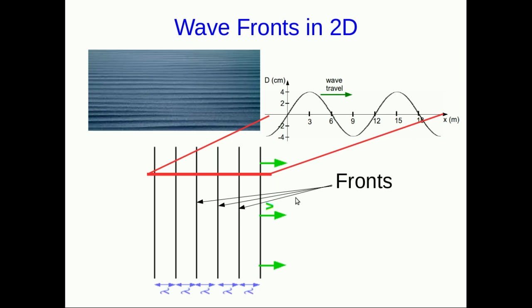We call these lines fronts. You can basically think of a front as the line or curve that corresponds to where a crest is when you're no longer in one dimension but now in two dimensions. We'll talk about fronts in three dimensions as well. If you walk along the front, you're walking along the top of a crest.